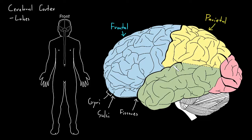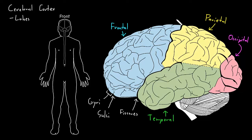The temporal lobe is on the other side of this big fissure from the frontal lobe, by the temporal bone. And the occipital lobe is way in the back, by the occipital bone of the skull. There are some other areas of cerebral cortex we can't see here, but when people talk about cerebral lobes, they're usually referring to one of these four: the frontal, parietal, temporal, or occipital lobes.